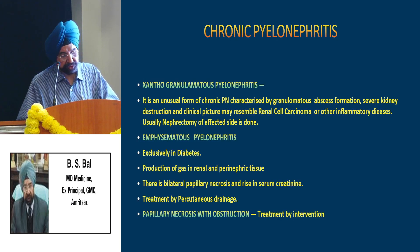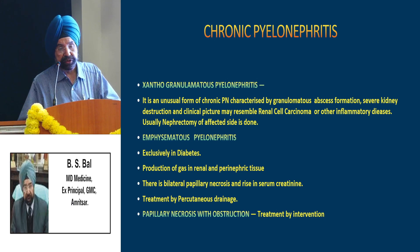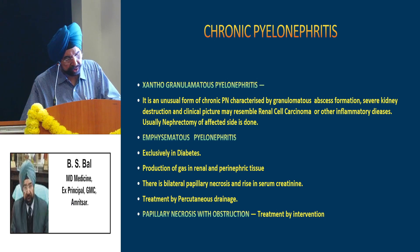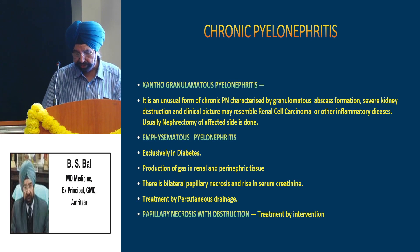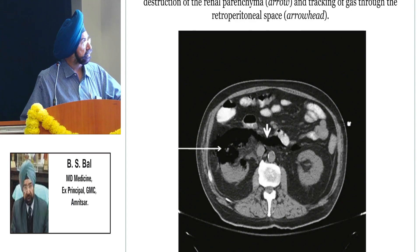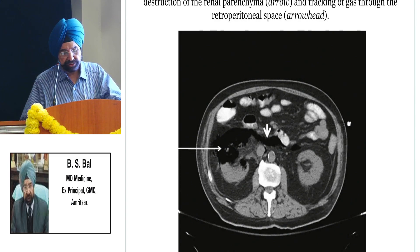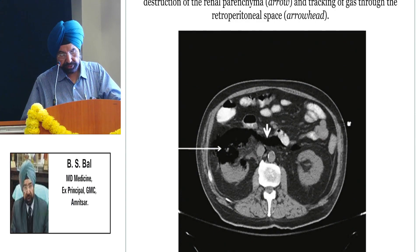The second type is emphysematous pyelonephritis, seen exclusively in diabetics, with production of gas in renal and perinephric tissues and bilateral papillary necrosis with rise in serum creatinine. Treatment is percutaneous drainage. The third form is papillary necrosis with obstruction, usually removed by intervention. On the CT scan, there is production of gas on one side of the kidney which has covered almost half the kidney, and this gas has gone to the retroperitoneal space as well — indicated by the arrowhead.